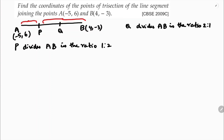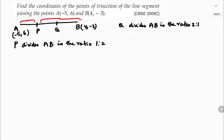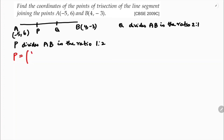So Q divides AB in the ratio 2:1. Now, to find P, we write the section formula: x = (M1·x2 + M2·x1) / (M1 + M2), y = (M1·y2 + M2·y1) / (M1 + M2).